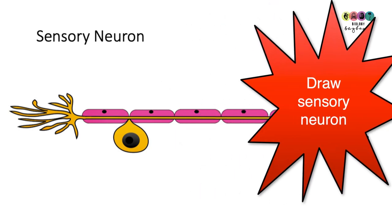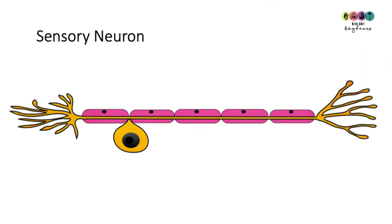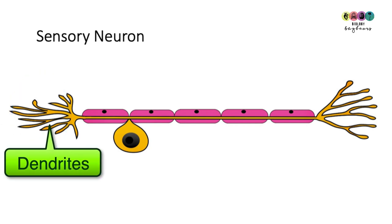Basically, the receptor cells — for example, in your skin or your eye — have detected some stimulus. An electrical impulse has been generated, and the first place it gets passed to is this end of the sensory neuron: the dendrites.